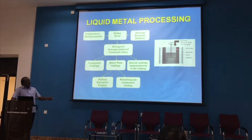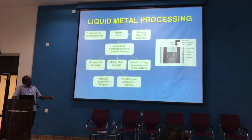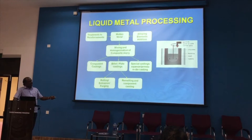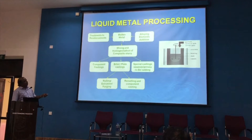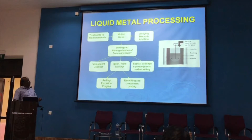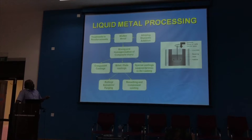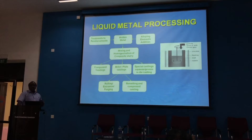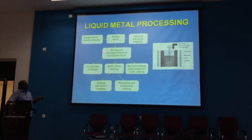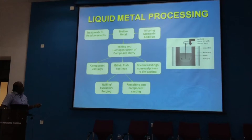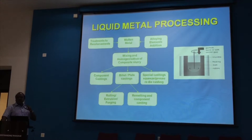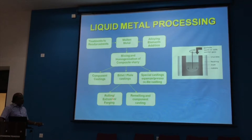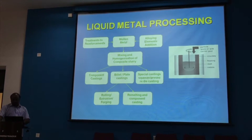The process involves taking solid metal, melting it, and inserting a mechanical stirrer. The reinforcement particles and alloying elements are added, then homogenized by stirring. The mixture is then cast into components, billets, or die castings. These billets and plates can be further processed by rolling or extrusion.